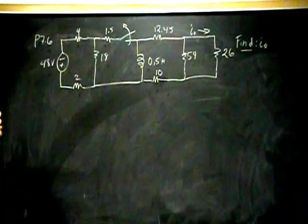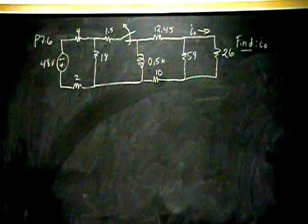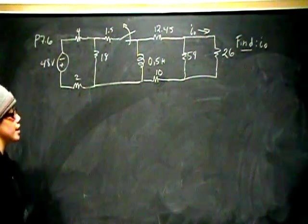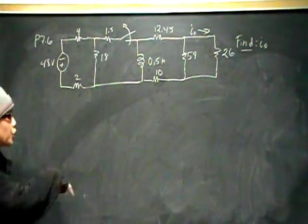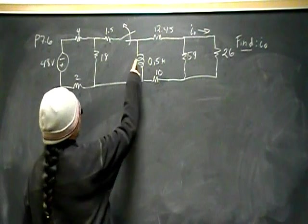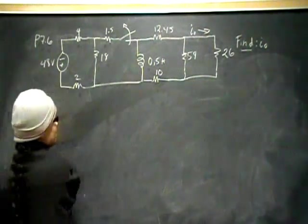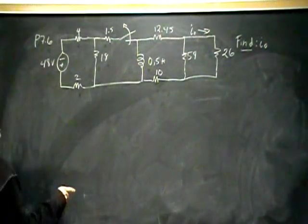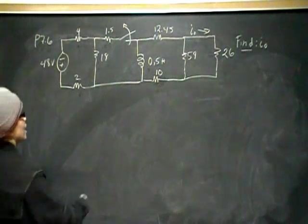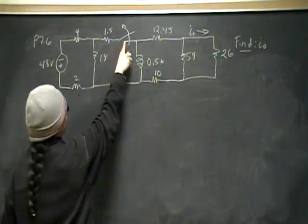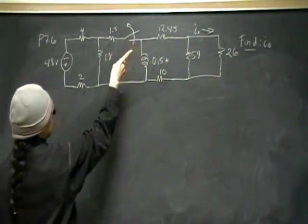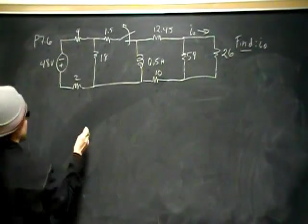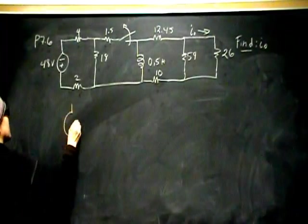Okay, so the key to this is looking at the initial current through the inductor. Well, let's take a step back. Let's look at this circuit before time 0. Before time 0, we have the circuit is closed, right? It opens after time 0. So we have a circuit that looks like this.